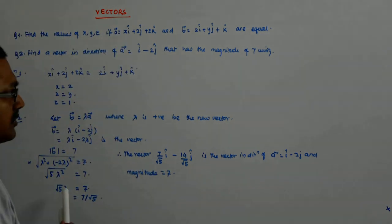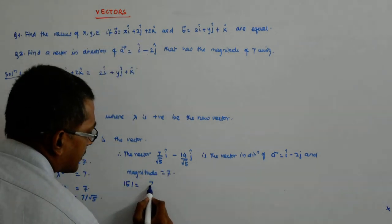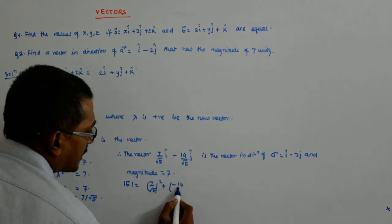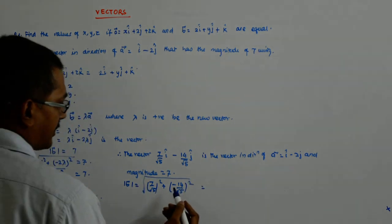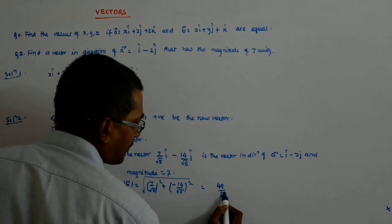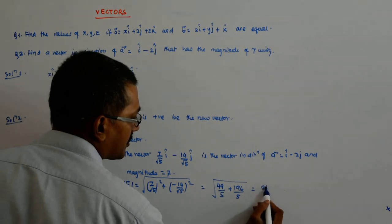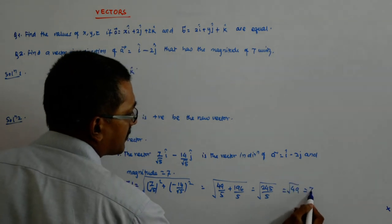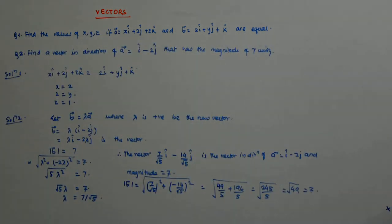Why do you get confused? Mod B is what? Mod B is 7 by root 5 whole square plus minus 14 by root 5 whole square, that is equal to 49 upon 5 plus 196 upon 5 root over, which is 245 upon 5 root over, which is 49 root over, which is 7. So yes, the magnitude is 7, as it was desired by the question, okay.